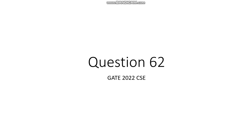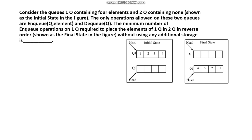Hello friends, today we are going to solve question number 62 from GATE 2022 CSC paper. The question is: consider Q1 containing four elements and Q2 containing none, shown as the initial state in the figure. The only operations allowed on these two queues are ENQ and DEQ. The minimum number of ENQ operations on Q1 required to place the elements of Q1 into Q2 in reverse order, shown as the final state in the figure, without using any additional storage.